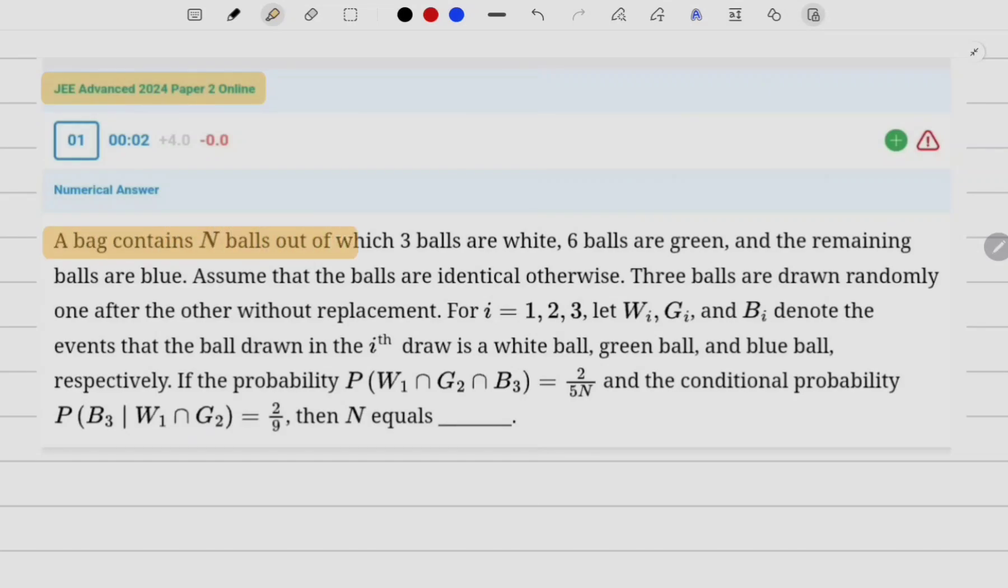A bag contains N balls out of which 3 balls are white, 6 balls are green, and the remaining balls are blue. Assume that the balls are identical otherwise. Three balls are drawn randomly one after the other without replacement.